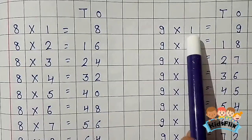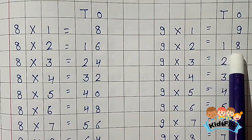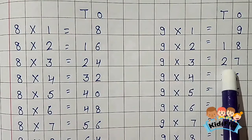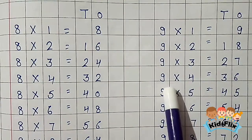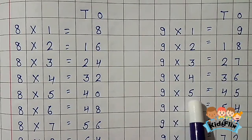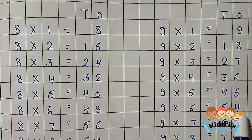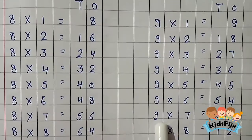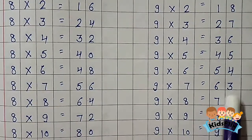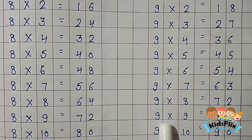9 1s are 9. 9 2s are 18. 9 3s are 27. 9 4s are 36. 9 5s are 45. 9 6s are 54. 9 7s are 63. 9 8s are 72. 9 9s are 81. 9 10s are 90.